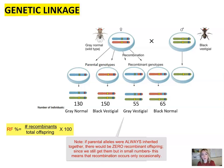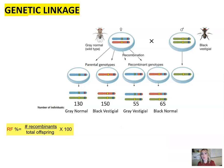Let's see what we would get if genes sat on separate chromosomes and those chromosomes are sorted independently — what ratios and outcomes would we expect. We are going to perform a test cross, where we take a heterozygous organism — in this case a fruit fly — and cross it with a homozygous recessive fruit fly.